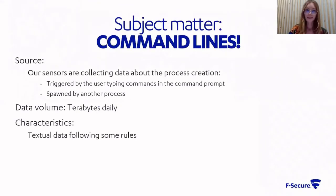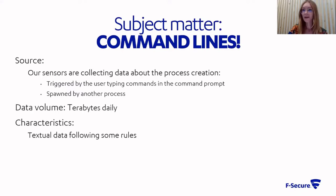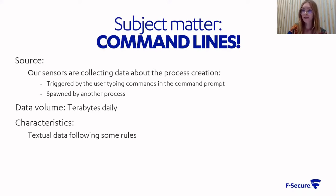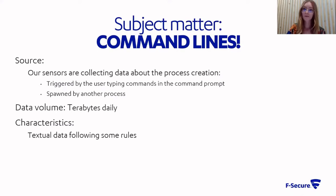What is the data that we are going to work with? The command lines at AppSecure are coming from process creation. We are monitoring our clients' machines with our products, and as a result, every time a process is created, we are logging the new command line that triggered it. It can happen either when the user is typing a command, when another process is spawning another one, or maybe when there is some scheduled task. As a result, we have terrific samples of command lines every day of pretty high diversity.